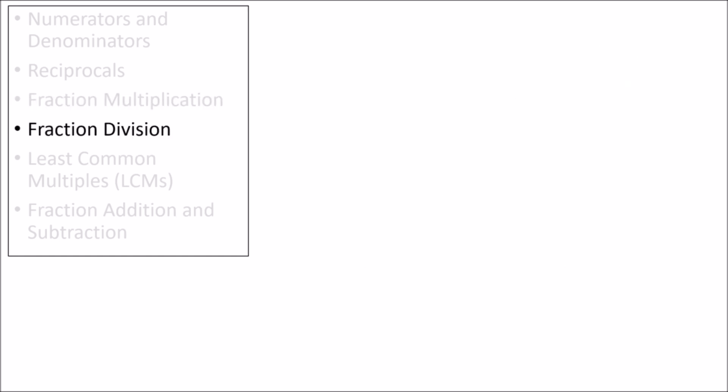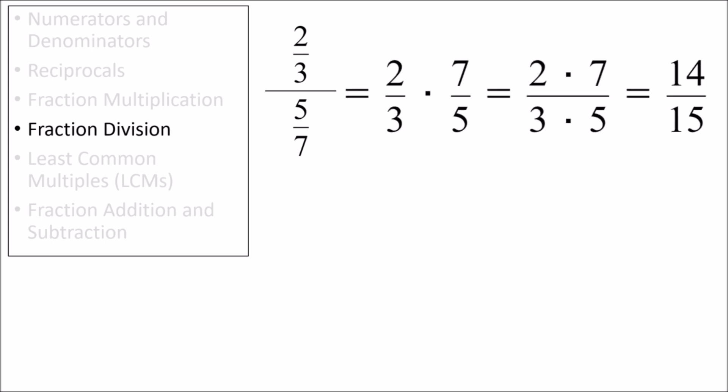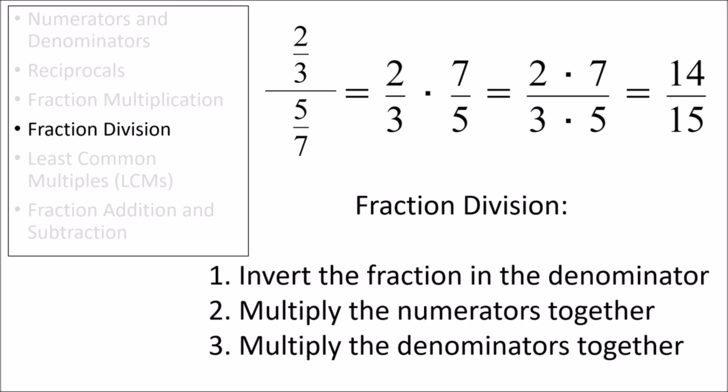Next, let's discuss how to divide fractions. This ends up being very similar to multiplying fractions. Here we have 2 thirds divided by 5 sevenths. To divide these two fractions, we need to first invert the fraction in the denominator. So here the 5 sevenths is inverted to become 7 fifths. Now we can just multiply the numerators together and multiply the denominators together to get 14 over 15. For fraction division, it's just like fraction multiplication except that we first invert the denominator.